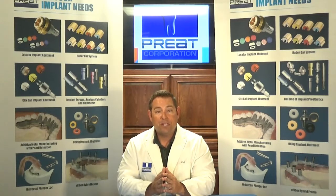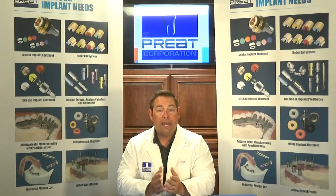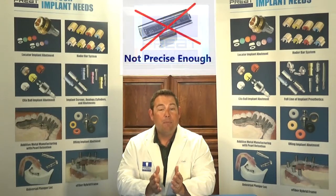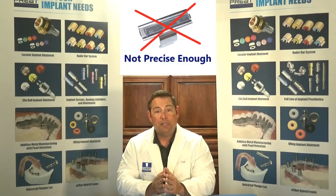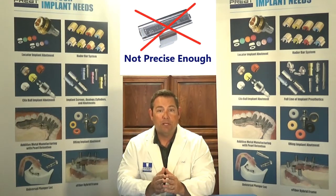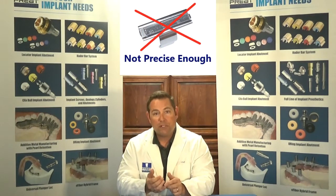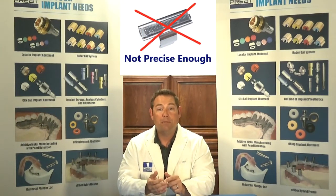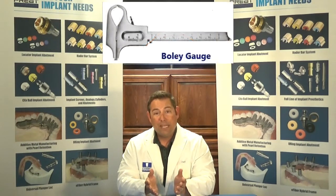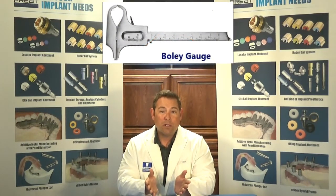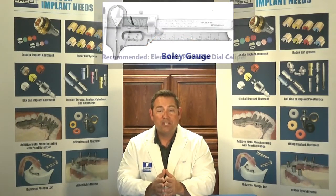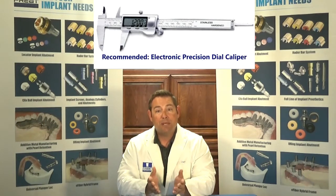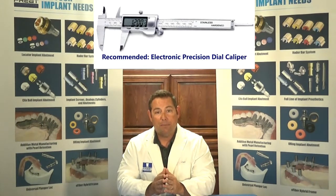The first is accurate measurements of the abutment. A millimeter ruler is not going to be precise enough — we're talking about the difference between 1.2, 1.4, and 1.8 millimeters. A bully gauge might work, but a precision dial caliper, especially an electronic one, is the best way to measure the diameter.